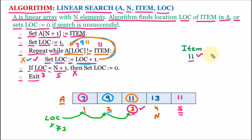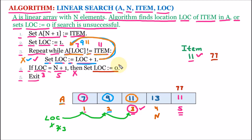But let us suppose we want to search for an item — let's say 77. We know that 77 is not in the array. Going through the algorithm, we set A[N+1] as the item, so at the last position we set 77. The location starts from 1 and goes through 7, 9, 11, 13 — nobody matches — and the location goes all the way to 5, which is N+1. In that case, LOC becomes N+1 and we set LOC equal to 0. Zero means element not found, so for 77 the location returned is 0.